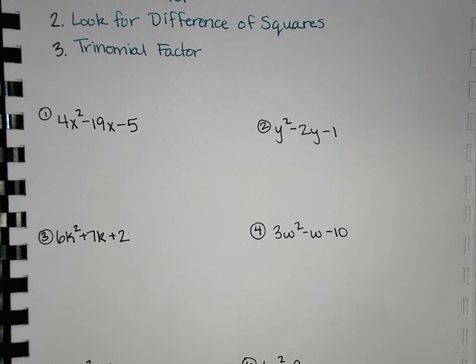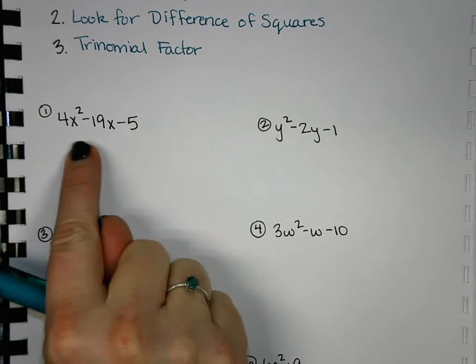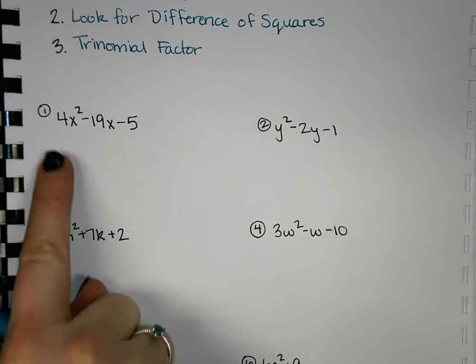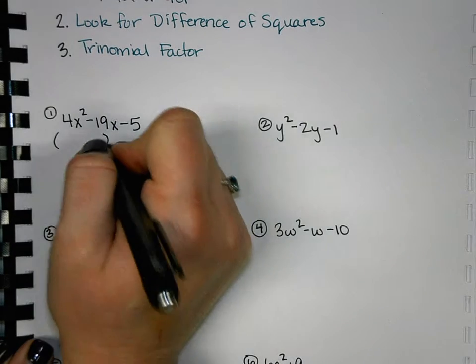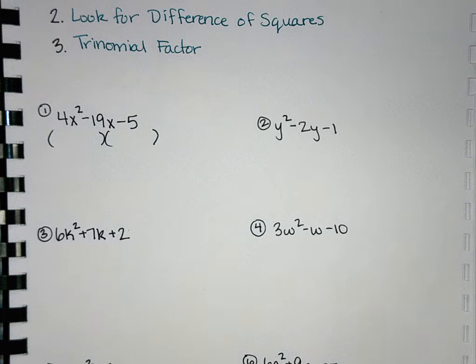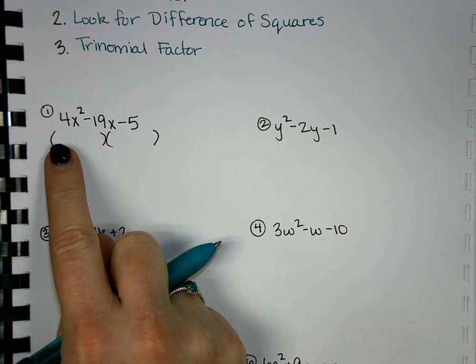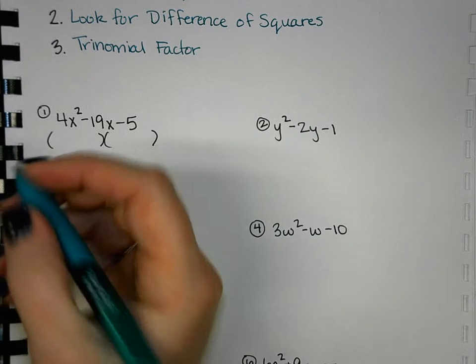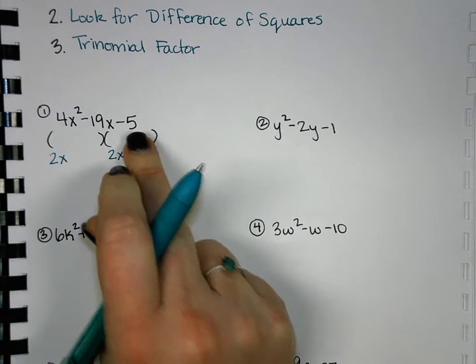So if we look at number one here, do we have a GCF? Is there anything in common between all three of those? No. Do we have a difference of squares? No, because it's a trinomial, not a binomial. So right there we can jump to our trinomial factoring, which is what we did yesterday. Let's start by putting our two parentheses and looking at factors of 4x². So what are two things that multiply to 4x²? 2x and 2x.